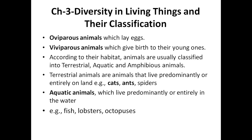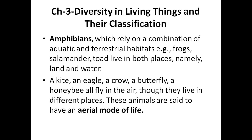According to their habitat, animals are classified into terrestrial, aquatic, and amphibious. Terrestrial animals live predominantly or entirely on land. Aquatic animals live in water — examples include fish, lobster, and octopus. Amphibians rely on a combination of aquatic and terrestrial habitats; examples are frogs, salamanders, and toads, which live in both land and water.